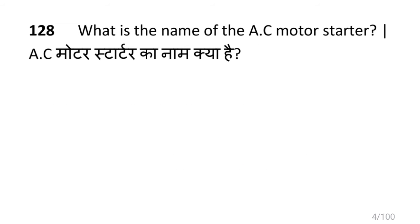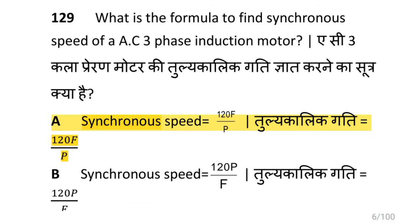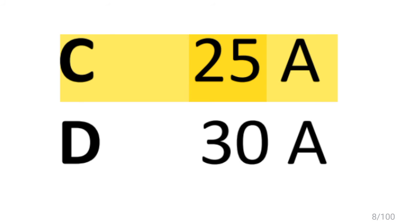The name of the AC motor starter is the auto transformer starter. The formula to find synchronous speed of an AC three phase induction motor is: synchronous speed equals 120F divided by P. The fuse rating to run a 10 HP three phase induction motor at full load is 25A.